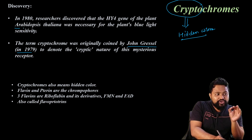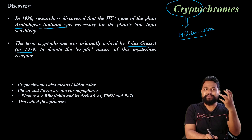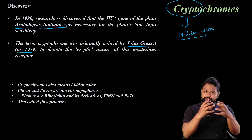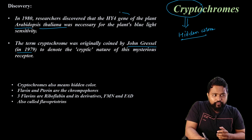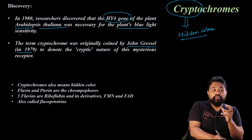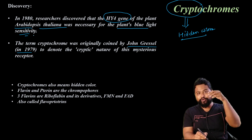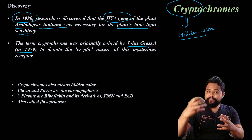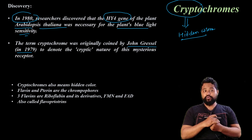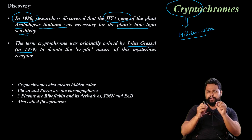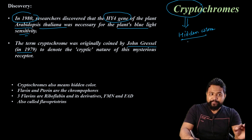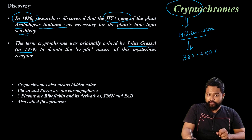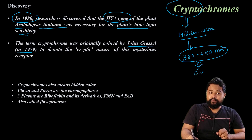The plant Arabidopsis is used in research to discover this receptor. We are researching this plant using gene-based approaches. We observe this plant under blue light to understand how it responds. Cryptochromes mainly absorb light in the range of 380 to 450 nanometers, and this is the blue light range.